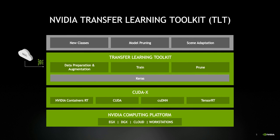TLT consists of just a few configurable steps: data preparation and augmentation, train, and prune. TLT runs on top of our Keras training framework, but for an end user this is completely abstracted away — you only need to modify an easy-to-use configuration file to get started. This toolkit sits on top of NVIDIA's CUDA-X stack, including lower-level libraries, the NVIDIA container runtime for GPU acceleration, CUDA and cuDNN for parallel processing, and TensorRT for model export and inferencing.